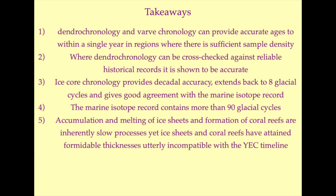To briefly recap what we covered today: tree rings, varves and ice cores record variations in plant growth, sediment transport and ice layer thickness in response to annual cycles. They preserve precise isotopic and chemical signatures of the environmental conditions in which they formed, extending back 11,000, 13,000 and 880,000 years respectively. These techniques have been cross-validated against one another and against the historical record, and where the record is reliable, they are shown to function very well. There is therefore no reason to question their accuracy when extended further back in time, and where we can cross-validate them against external geological records, they are perfectly consistent. But the reality is we don't need any of these chronological techniques to be that accurate to reject the young Earth hypothesis.